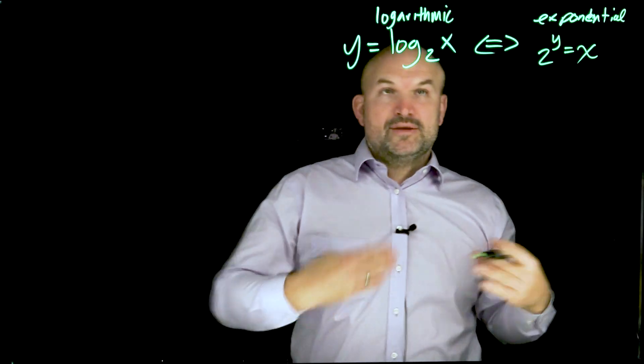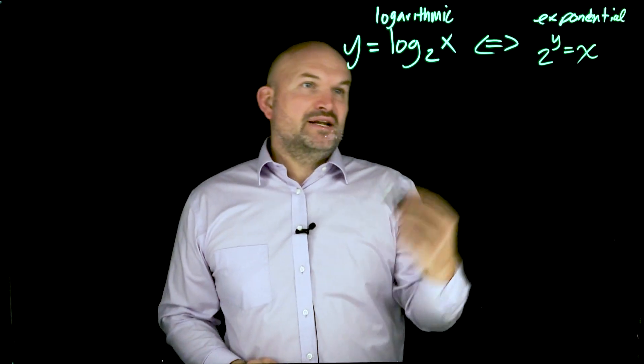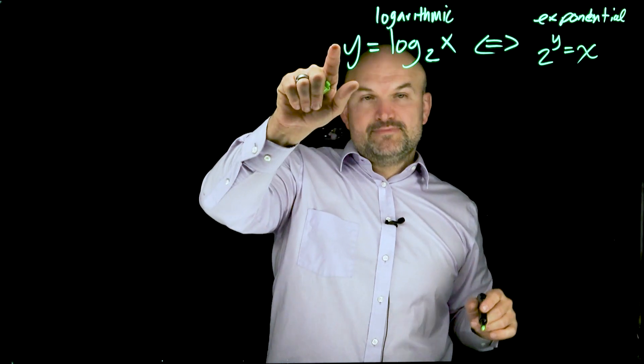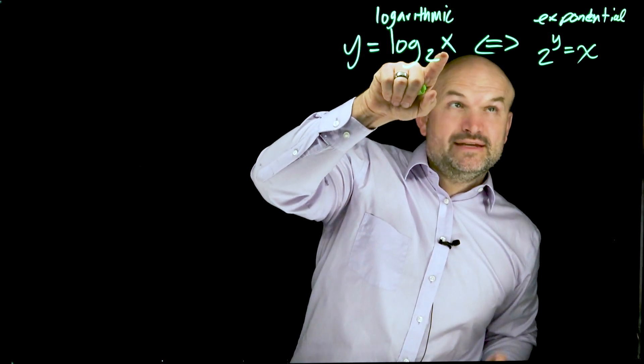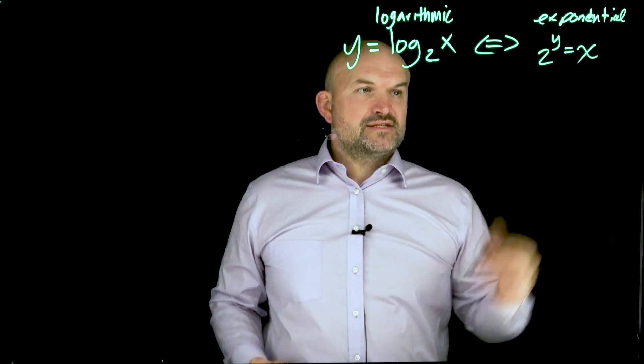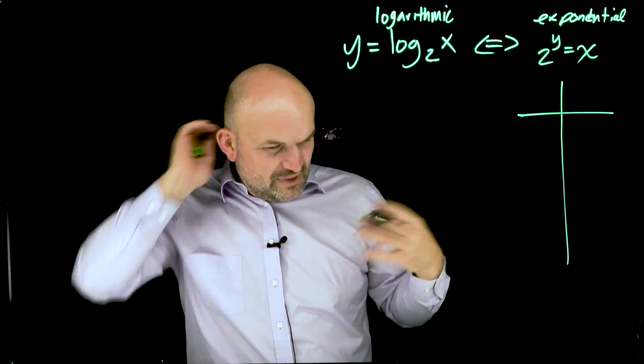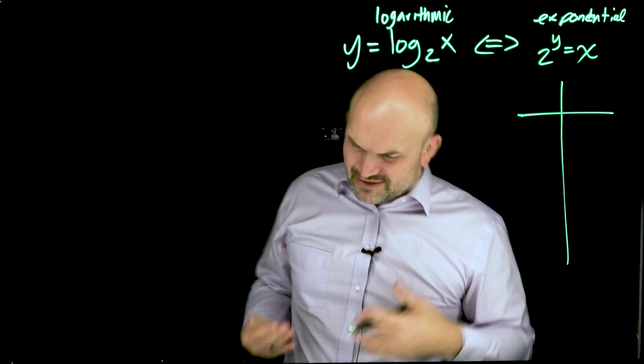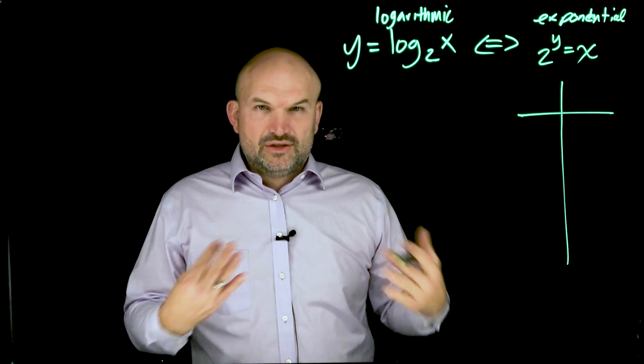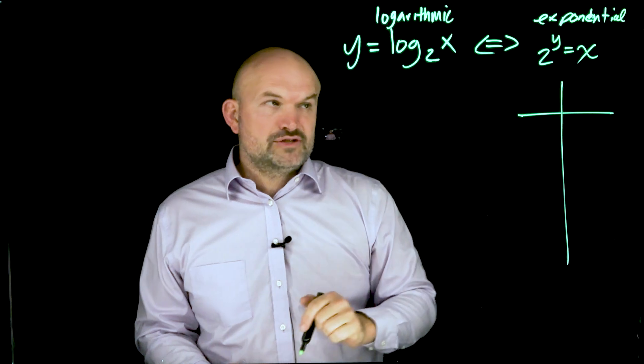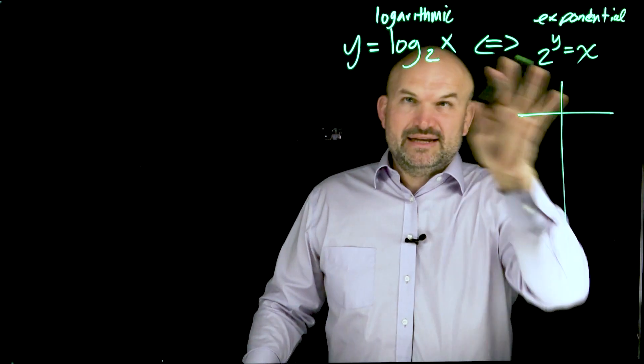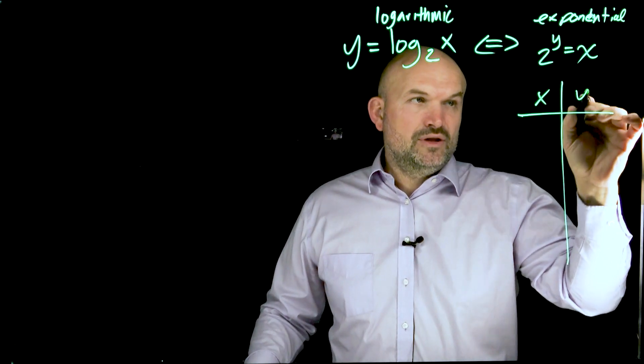When we are looking for log base 2 of x, we're basically asking ourselves: is 2 raised to this power y going to equal x? The reason why this is important is if I want to graph or remember what does a logarithm graph look like, where's the y-intercept, where's the asymptote, I always like to start with this graph first. And then even if you need a little bit more help, create a table of values.